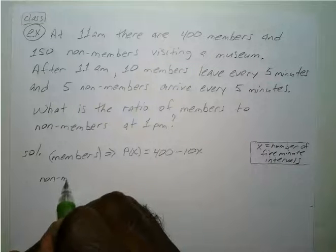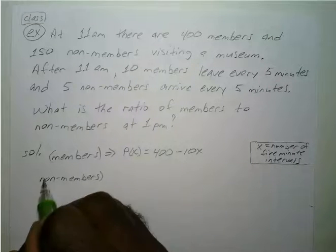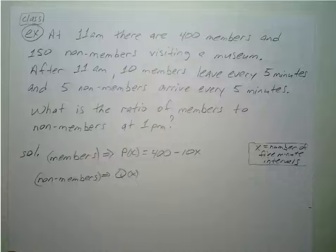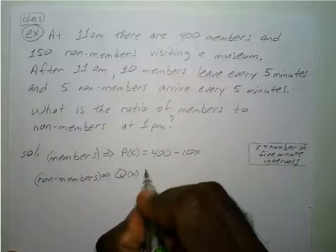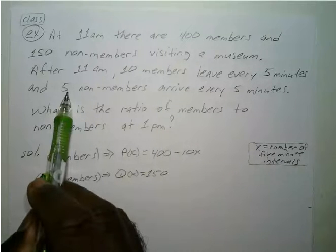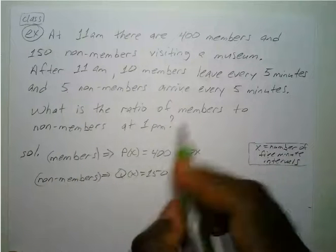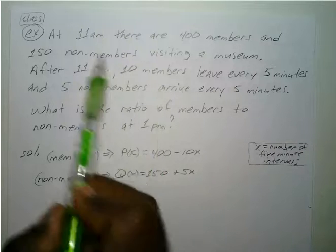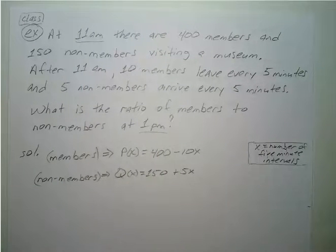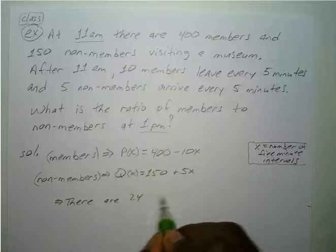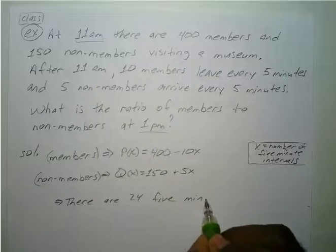Now for your non-members, we'll make that q of x. There were 159 non-members at 11 a.m., and 5 arrived every five minutes, so that's plus 5x. Between 11 a.m. and 1 p.m. there are 24 five-minute intervals.